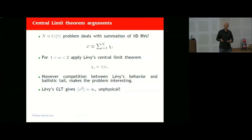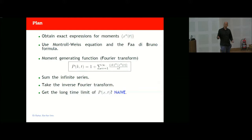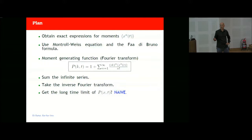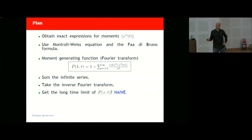The plan: we obtain the exact expression for the moments using the Montroll-Weiss equation, a famous equation exploiting convolution theorems in Laplace and Fourier space. We differentiate in k to get all moments in the long-time limit. Then we define the moment generating function — P_k(t), where k is the Fourier variable, equals 1 plus the sum over n from 1 to infinity of (ik)^n times the averaged moment ⟨x^n⟩ divided by n-factorial. I insert the asymptotic values of the moments into this series, sum it, and take the Fourier transform back to position space.